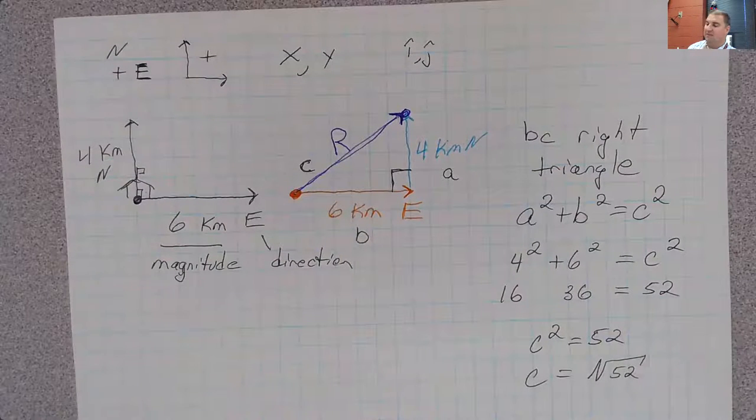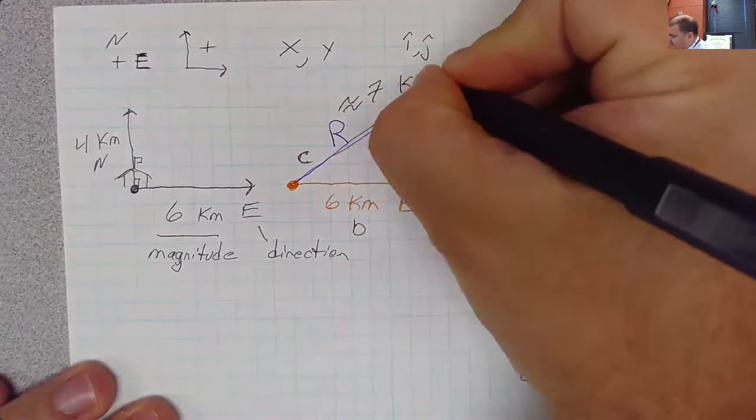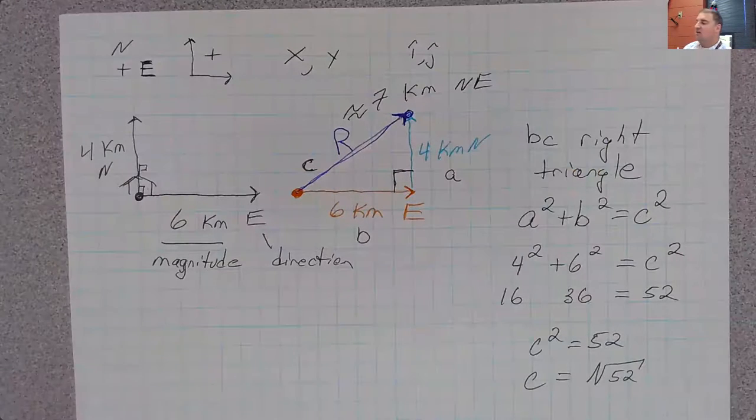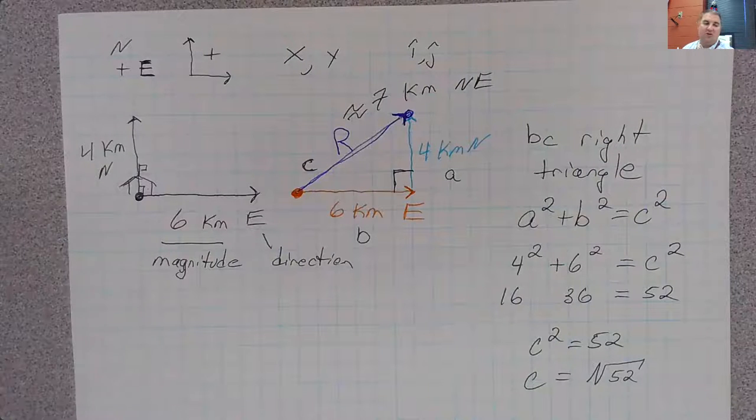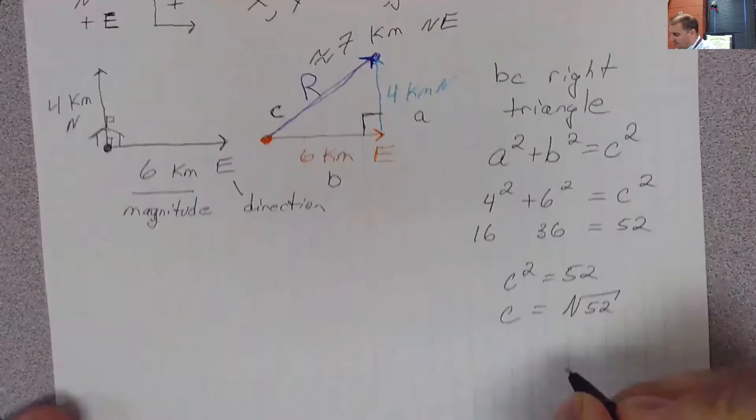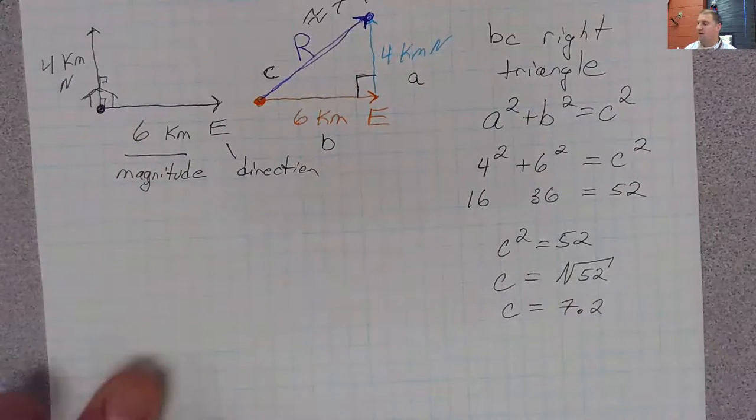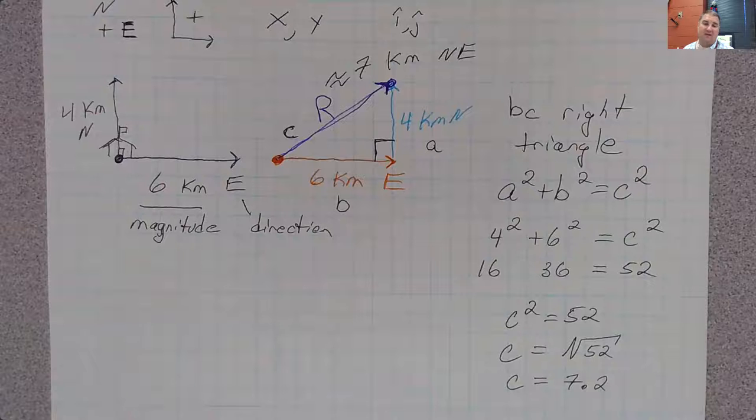Now, you should be able to estimate in your head that this is going to be just a little bit bigger than 7 kilometers. And this isn't precisely in the northeast direction, but it's close to being in the northeast direction, so we'll go ahead and label that now for the direction. You can, of course, pull up an actual calculator, do the square root of 52, which is 7.21. So C equals 7.2, especially since we only had the 4 and the 6 kilometers. Maybe we should have one decimal on each of those, but so that's what you get for the math here for adding these two vectors.